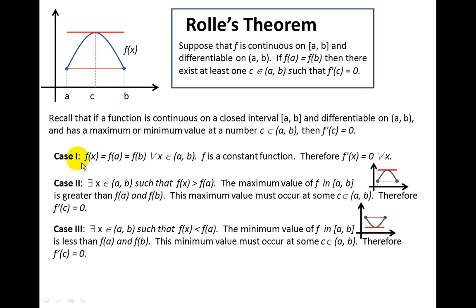Let's suppose that this function is a constant function, like f(x) equals 2, or something like that, just a number. Well we know that the derivative of a constant function is zero. So obviously f'(x) equals zero for all x in that interval. So that's kind of trivial.